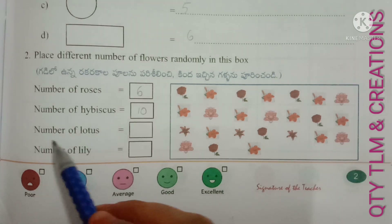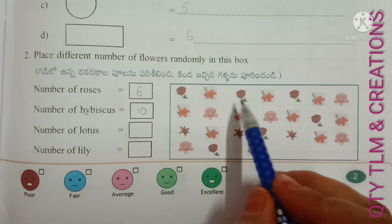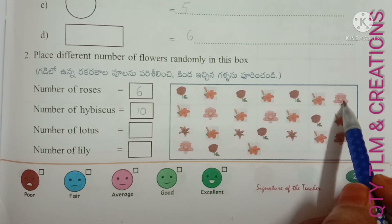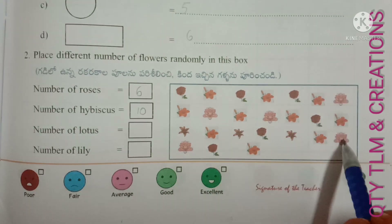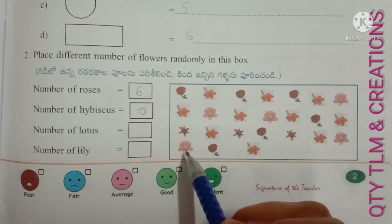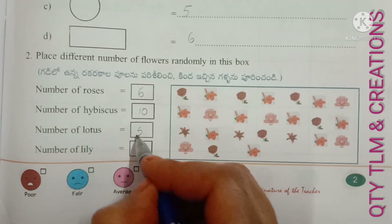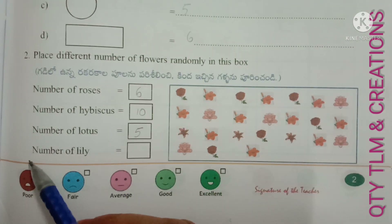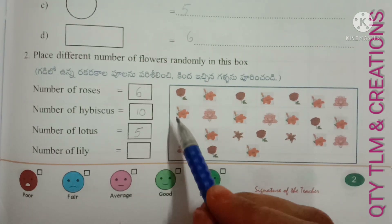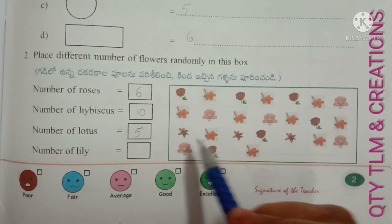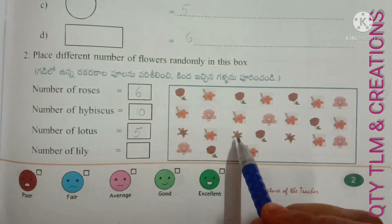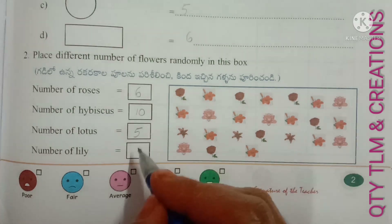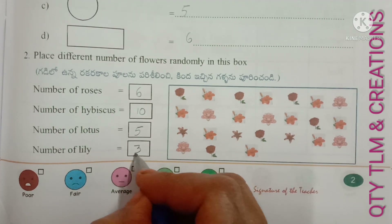Next, number of lotus. This is the lotus. So, 1, 2, 3, 4, and 5. Next, number of lily. This is lily. So, 1, 2, 3. Number of lilies are 3.